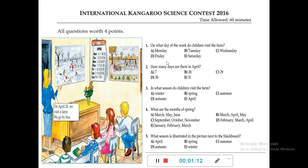International Kangaroo Science Contest 2016. Time allowed is 60 minutes. All questions are worth 4 points. On the first page, you can see a picture with a teacher and a board, showing two scenes — one is winter and the other is spring. There is a calendar showing April with days Monday through Sunday. There are 30 days in April. The information states: on April 20, we visit a farm, and we go by bus.